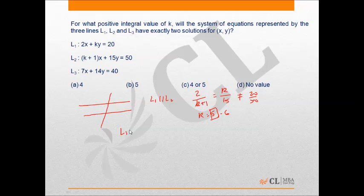Now let us check when L1 is parallel to L3. In this case we get 2 by 7 is equal to k by 14 is not equal to 20 by 40.